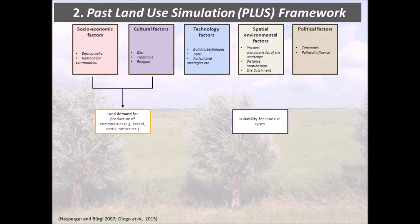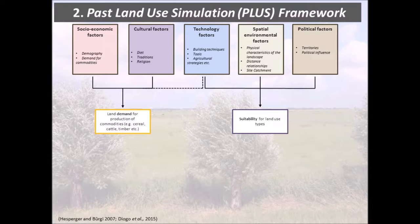On the other hand we have the suitability: technological factors, spatial environmental factors, and political factors. Political factors include ownership, territories, and political influence. Spatio-environmental factors include physical characteristics of the landscape, distance relationships, site catchment, and so on. Technological factors we place deliberately in the middle — think of tools, agricultural systems, and building techniques — because in other contexts they might also influence the demand. In our current study we didn't include that, making it a dotted line, but the conceptual framework does include that.